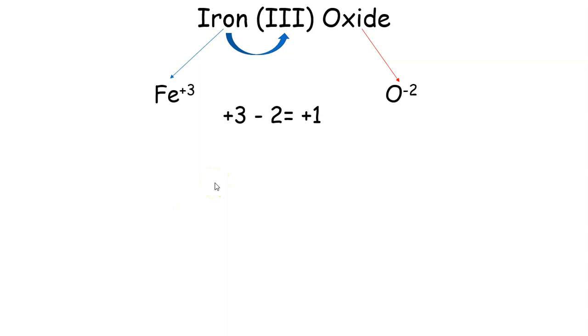Next, what we want to do is we want to add up our charges. So we have +3 - 2, and that equals +1. The problem is, when you form a compound, it wants to equal 0. So we have a plus charge here, so we're going to add another oxygen minus 2. And then we add this up. +3 - 2 - 2 equals -1. We're negative.